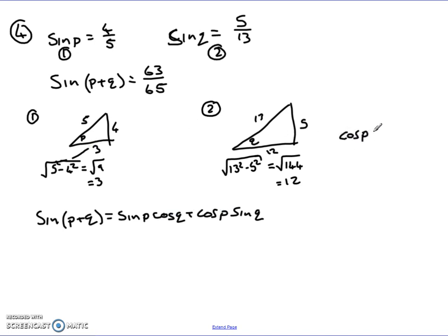So I can get cos P, again, SOH-CAH-TOA tells me it's adjacent over hypotenuse, so cos of P is equal to 3 over 5. And cos of Q is given in here again by adjacent over hypotenuse, which is 12 over 13.